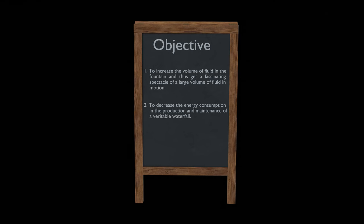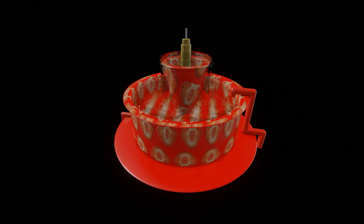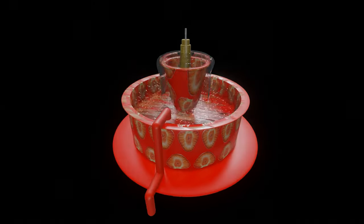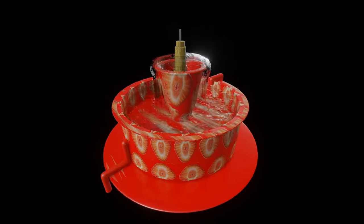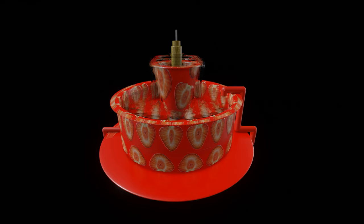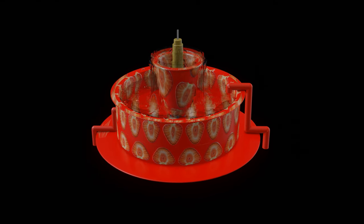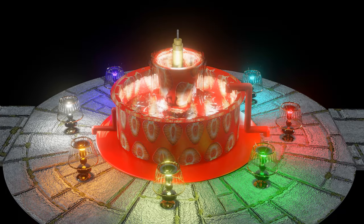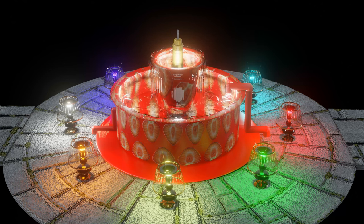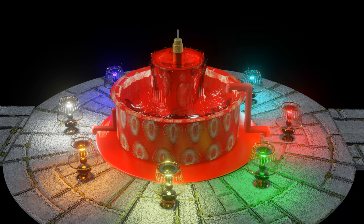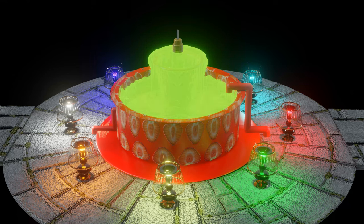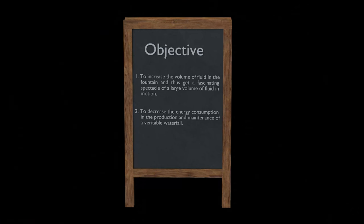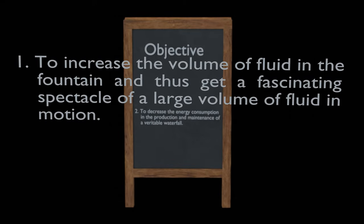Let us check whether the objectives of Tesla's were fulfilled or not. We can see that in Tesla's design, a large volume of fluid is flowing in the form of circular cascades, which is providing a magnificent spectacle. To get a more beautiful display, we can use illumination, which can be carried out in many ways, and to heighten the effect, a colored, opalescent, or phosphorescent fluid may be employed. Therefore, Tesla's first objective has been achieved.